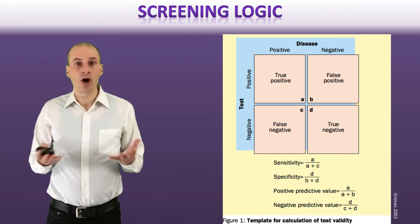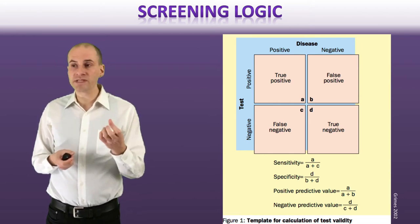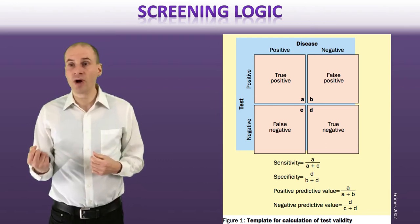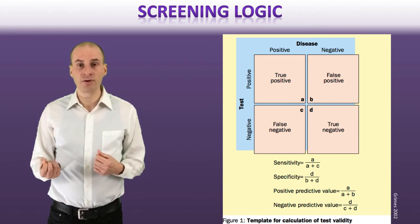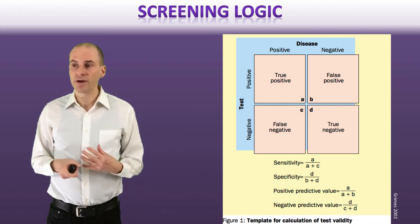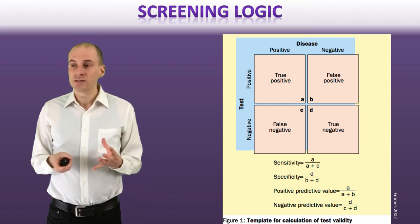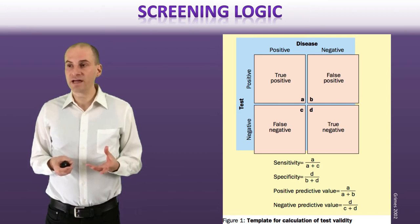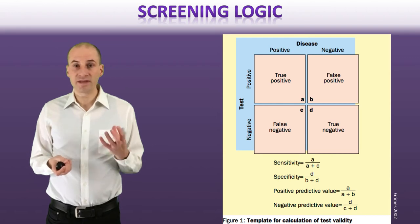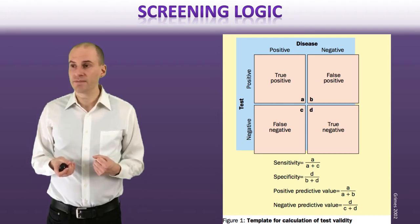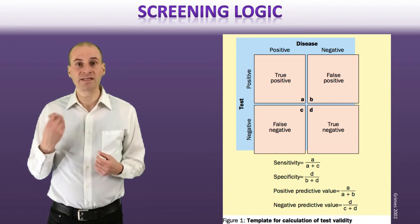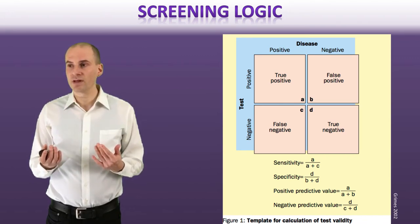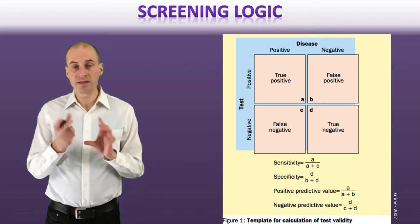Sometimes tests aren't perfect. In an ideal world, they would always give a true positive — if someone has the disease, the test says yes — and a true negative, meaning the test tells you the person doesn't have the disease. But tests aren't perfect. Sometimes you have false negatives and false positives. A false negative is when someone actually has the disease but the test says they don't. A false positive is when the test says someone has a disease but it actually turns out they don't have it. That's when the test is wrong.